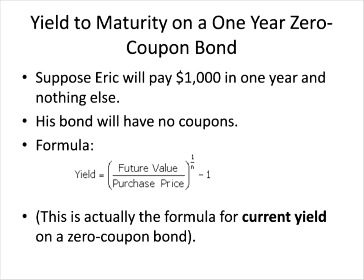The future value is the same thing as face value — it's what Eric will pay in the future. The purchase price goes in the denominator, and the fraction is raised to the 1/n power, where n is the number of periods. Subtracting 1 simply gives us the percentage earned, which is the yield. Notice that mathematically, if the denominator gets larger, the yield gets smaller. So as the price people are willing to pay for Eric's bond rises, the yield on that bond falls.